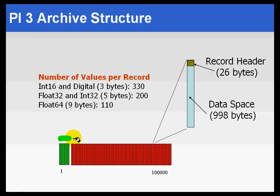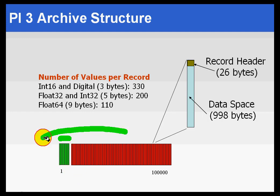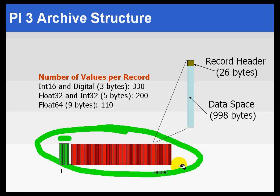If we have 10,000 tags, that means the first 10,000 records are going to be primary records. Now, there is a maximum of 50% of all these 1K records that can be used for primary records.